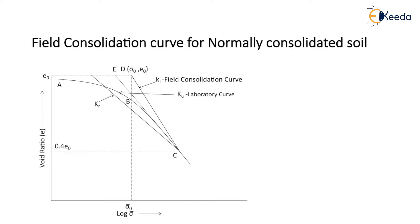However, the downward extension of the Kr line also intersects the horizontal line drawn from point E0 bar at point C.